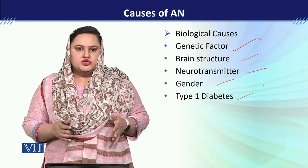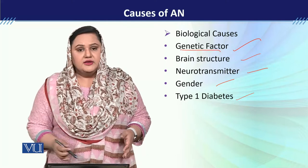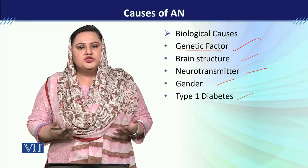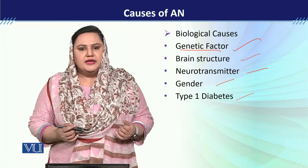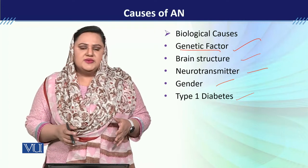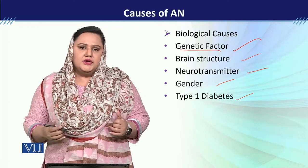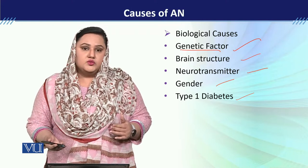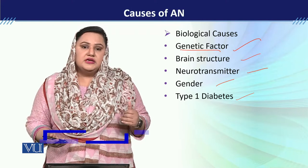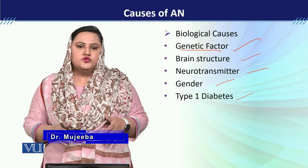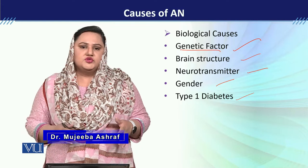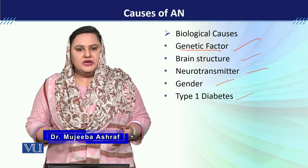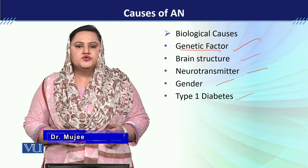As for the genetic factor, we know that it plays a major role in most diseases. It has been explained that adolescents who have anorexia nervosa — their relatives have almost 4 to 5 times higher chances of having anorexia nervosa or eating disorders.